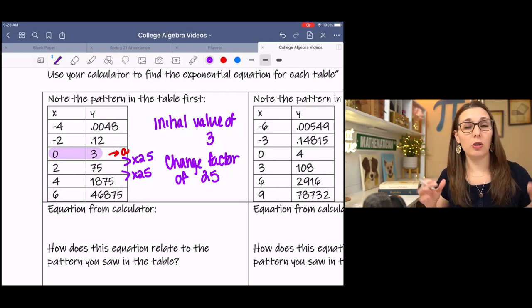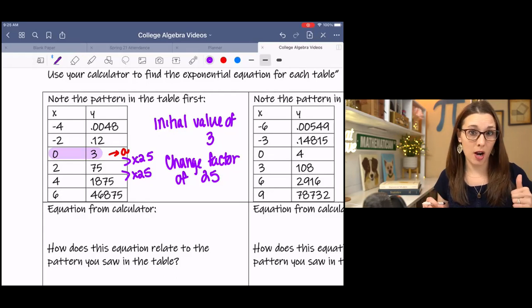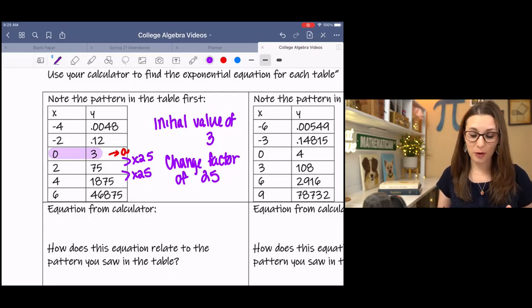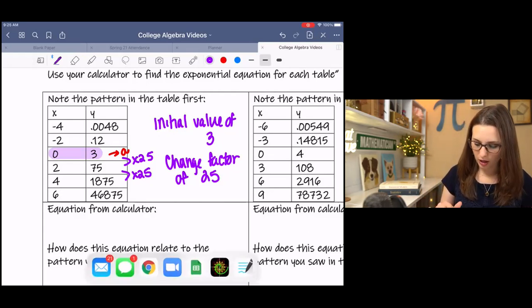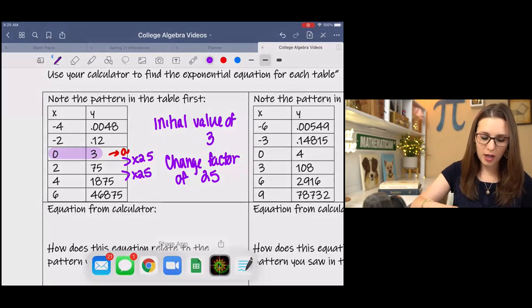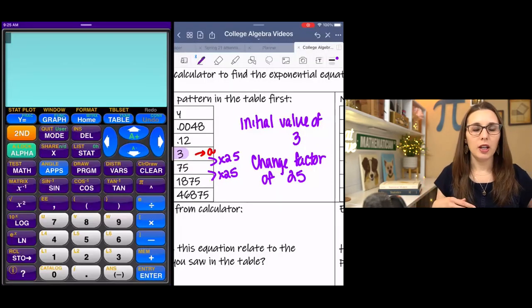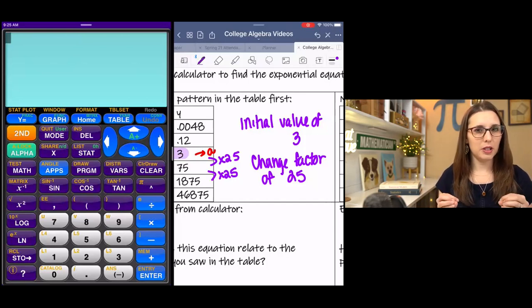So let's look at the calculator and use the steps in the calculator to find the equation using that. Now, you might have already, if you know a little bit about exponentials, you might have the equation in your mind. If not, that's okay. We're going to use the calculator to show that. I'm going to pull up my calculator app. This is Graphing Calc 83. If you have a TI-84, 83, TI-Inspire, anything like that, it should be the same steps.